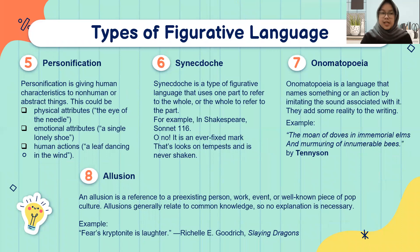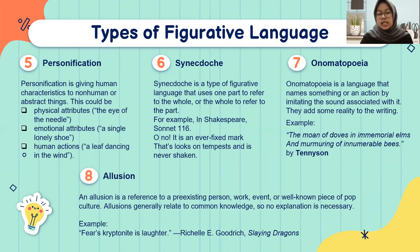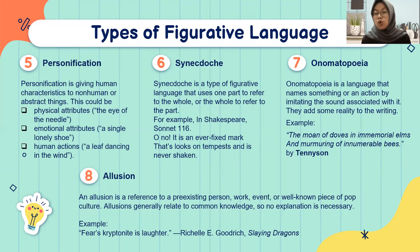The fifth type is personification — giving human characteristics to non-human or abstract things. Examples: physical attributes — 'the eye of the needle' (the eye being a human characteristic applied to a needle); emotional attributes — 'a single lonely shoe' (a shoe is usually one of a pair, so being alone makes it 'lonely'); and human action — 'a leaf dancing in the wind.'